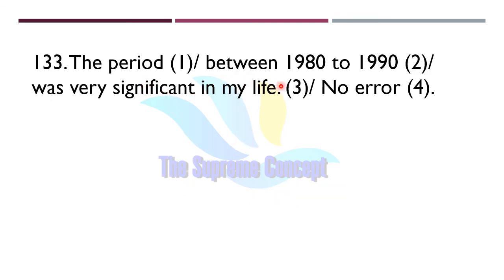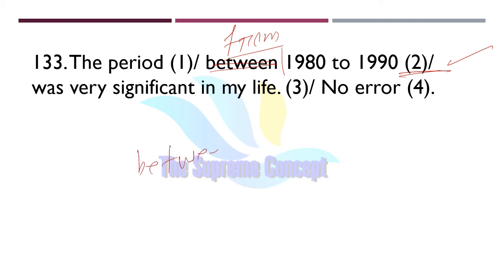Question 133: 'The period between 1980 to 1990 was very significant in my life.' The error lies in part number two — it would be 'the period from 1980 to 1990.' Either we use 'from...to' or 'between...and' — these are the correct pairs.